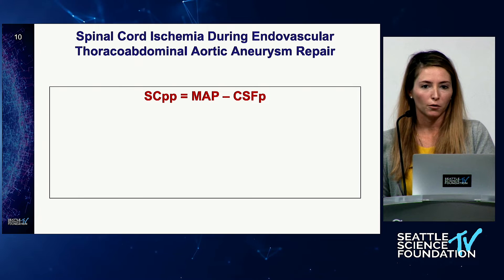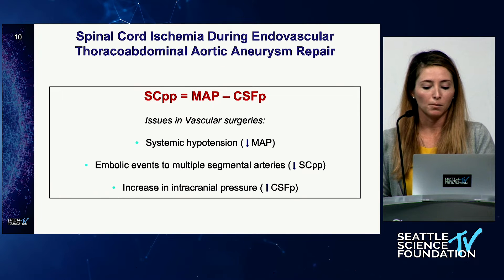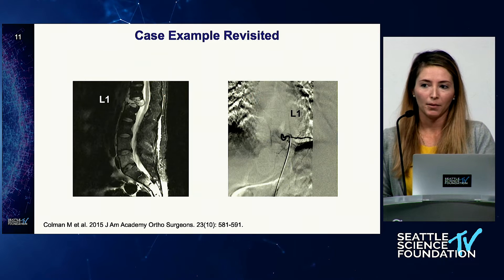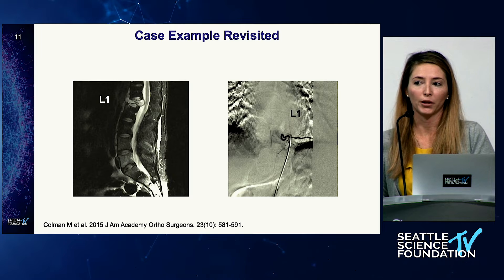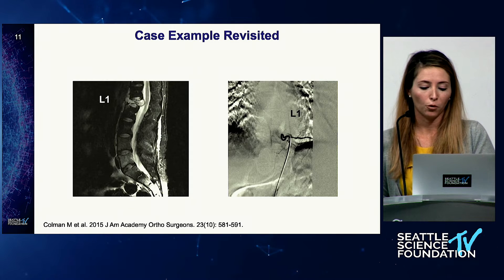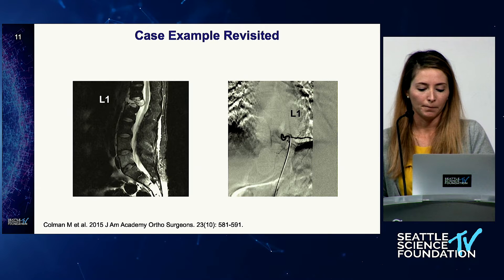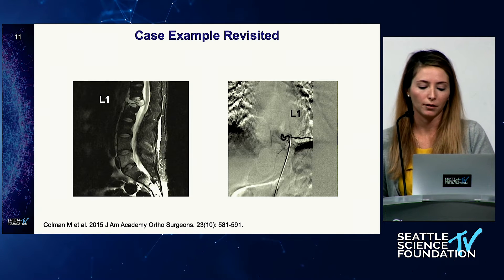But if we go back and look at the equation for spinal cord perfusion, there are a few issues with the vascular surgeries that we don't see in spine surgeries — issues that put those patients at risk for decreased spinal perfusion pressure. With that in mind, we come back to the initial case. This patient underwent a preoperative spinal angio, which showed that the artery of Adamkiewicz was at L1 — at the level of surgery. They moved forward with the spondylectomy and took the vessel. The patient just had some mild hip flexor weakness due to L1 nerve root sacrifice.